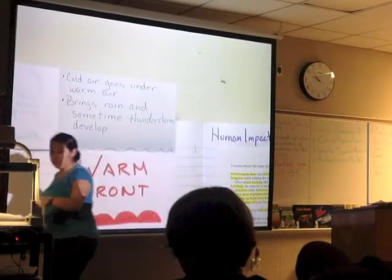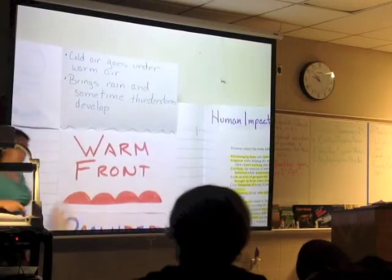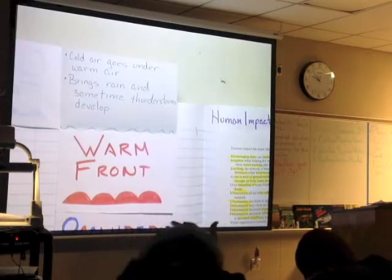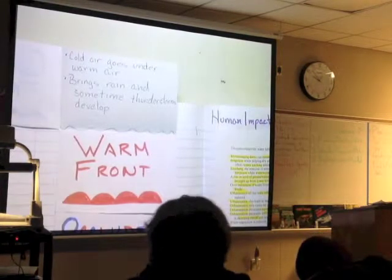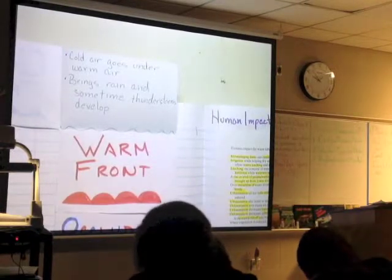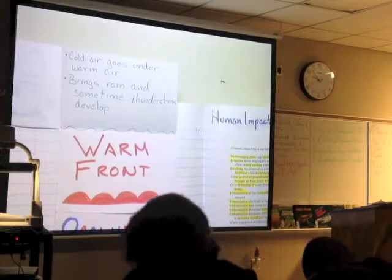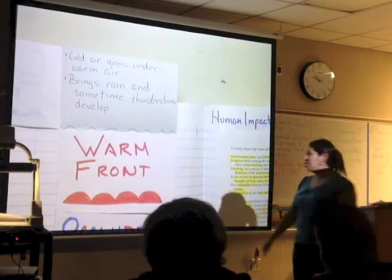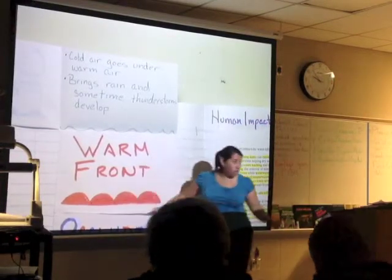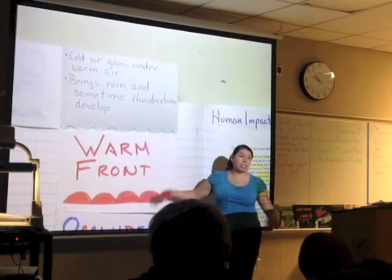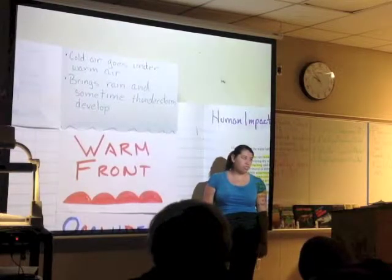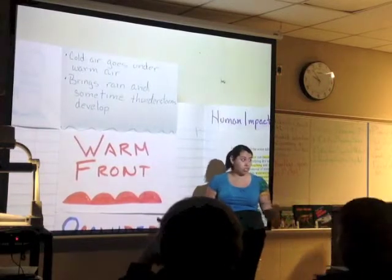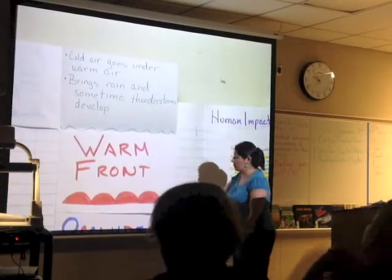Now we're going to move on to the warm front. The warm front will always be red, and it's going to have half circles. Whenever you get a really bad sunburn, you can get blisters — little bumps. Think of these half circles as little blisters; they're always going to be warm. This is important because if a test isn't in color, you can still distinguish the symbols.